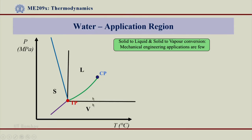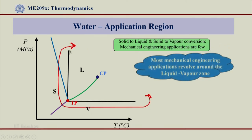We say that this is a region where liquid to vapor transition happen is a very important region for us. This region is of very much importance to us. Most of the mechanical engineering applications revolve around liquid to vapor zone.